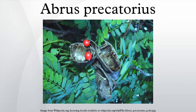The Tamils use Abrus seeds of different colors. The red variety with black eye is the most common, but there are black, white and green varieties as well. The seeds of Abrus precatorius are very consistent in weight. Formerly, Indians used these seeds to weigh gold using a measure called a rati, where 8 rati equals 1 masher, and 12 masher equals 1 tola.